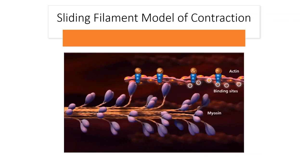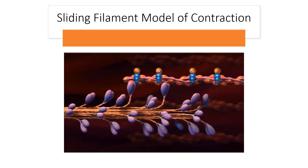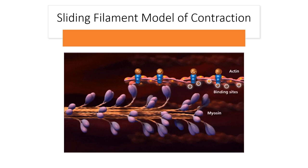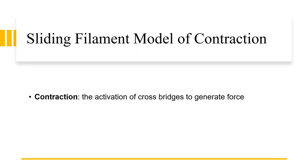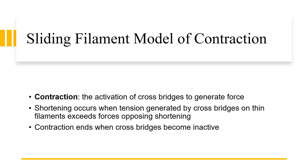The sliding filament model of contraction involves activation of cross bridges that will generate force and cause the muscle to contract. Shortening occurs because the tension created by these cross bridges on the thin filament will exceed the force opposing the shortening. There are always opposing forces, but when we have more force in the contracting sense, that will cause contraction. When contraction ends, the cross bridges will become inactive and will no longer be connected.